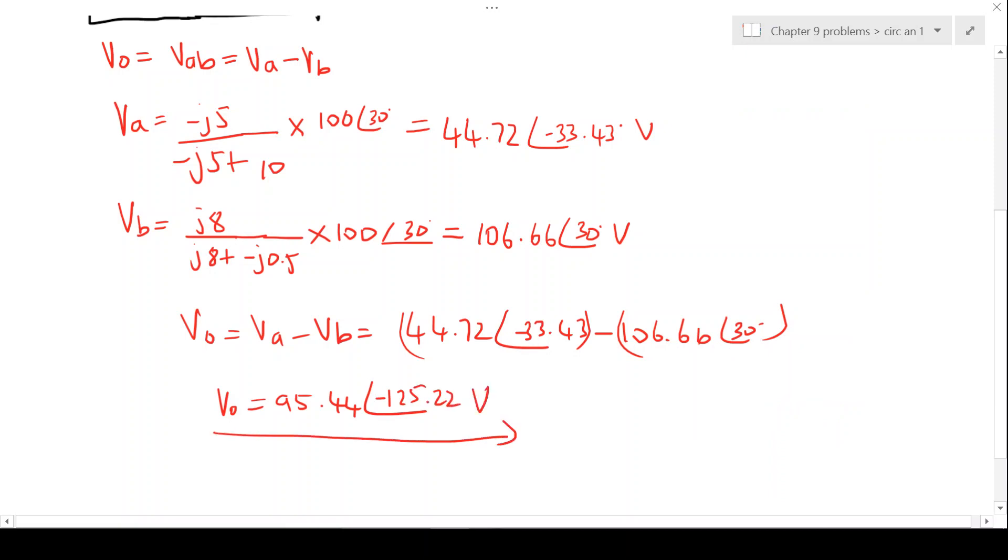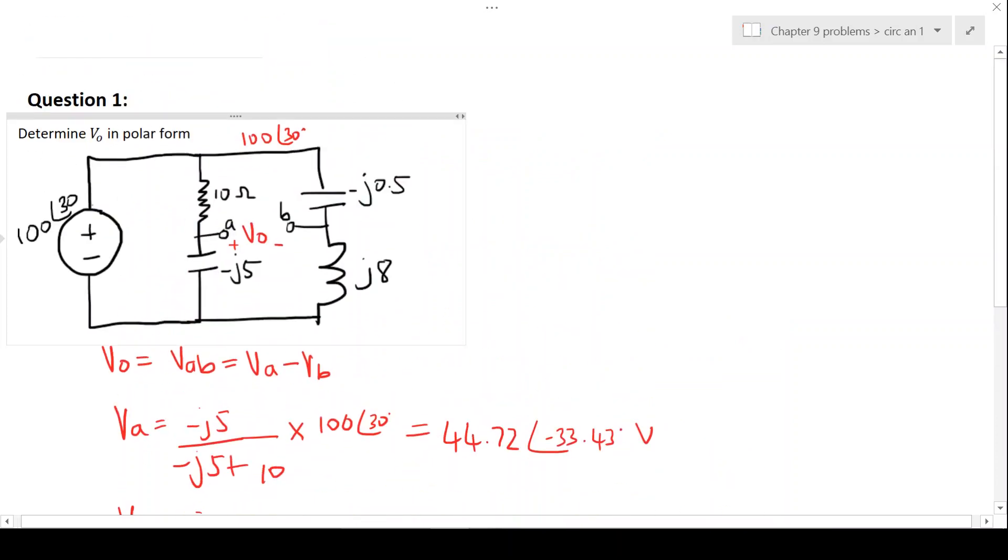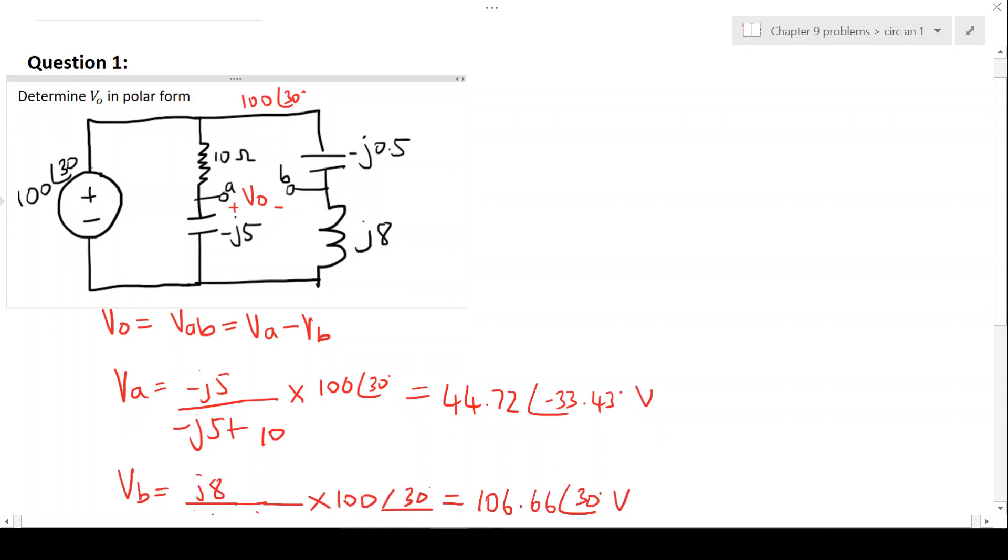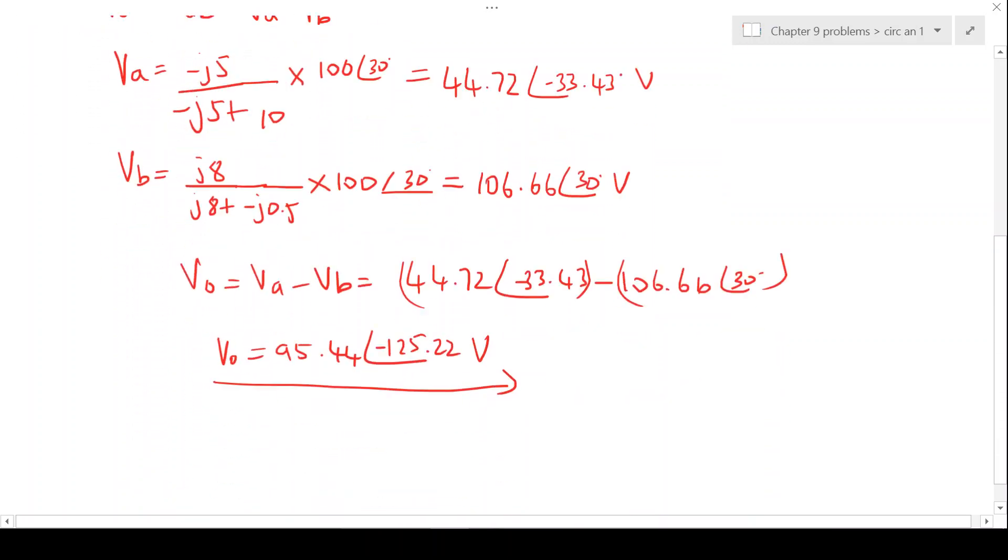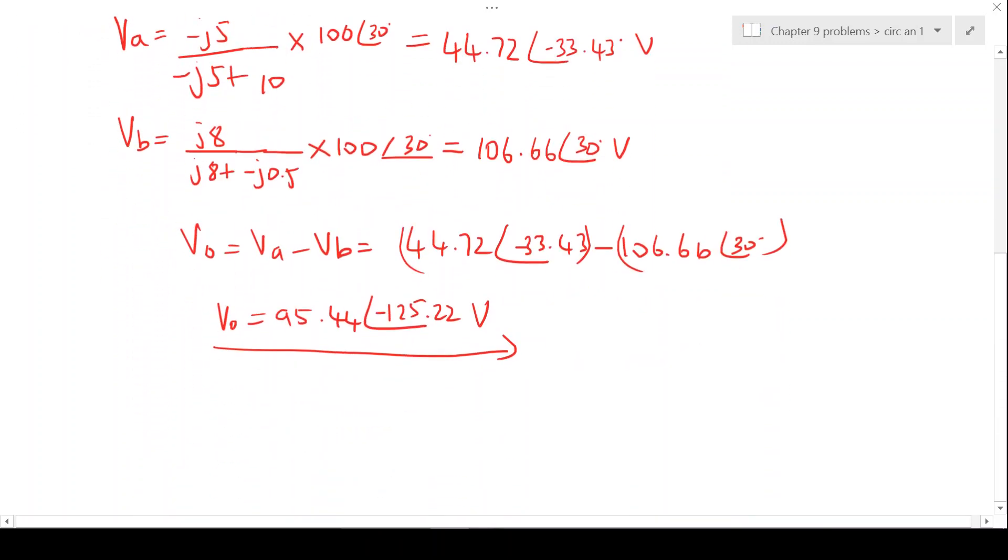Right, and that's the voltage V0, which is the voltage from point VA to point VB. So you'll notice that the moment you convert the capacitor and the inductor to impedances, then this becomes a simple KVL-KCL circuit as if you had resistance. Thank you for watching this video and enjoy the course.